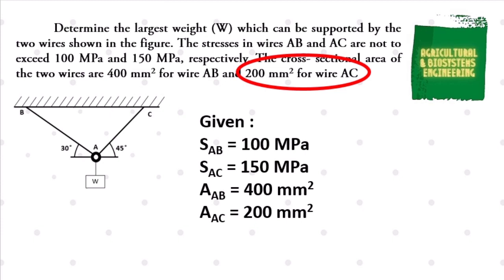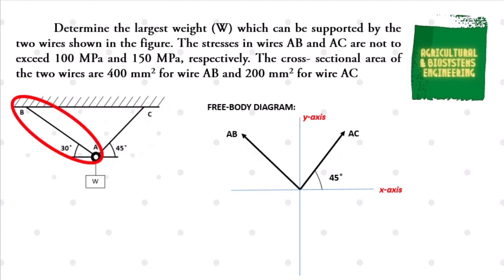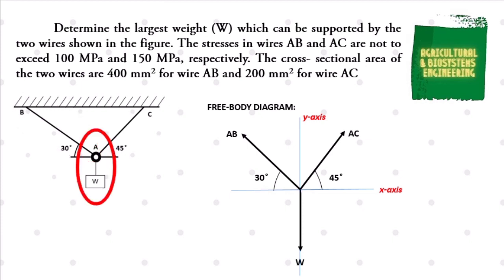After identifying our given, we have to construct first our free body diagram for us to see clearly the forces acting on the wire. We have force AC with an inclination on the x-axis of 45 degrees. Next, we have force AB with an inclination of 30 degrees on the x-axis. Lastly, we have force W.